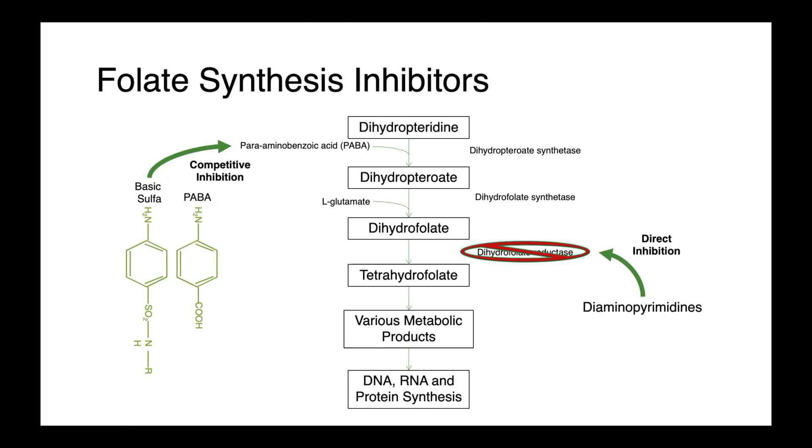Our other folate synthesis inhibitors, our diaminopyrimidines, so trimethoprim, act by directly interfering with dihydrofolate reductase. They directly inhibit this. Because these two drugs act at different steps of the same pathway, they're synergistic and are oftentimes formulated together in pharmaceutical preparations.